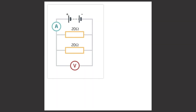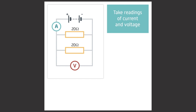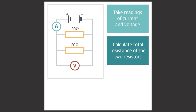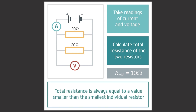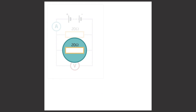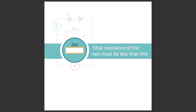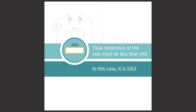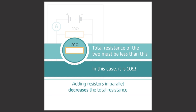Now we'll look at resistors in parallel. Make a circuit with two 20 ohm resistors in parallel with each other. The voltmeter is added in parallel and the ammeter is in series as usual. Take readings of current and voltage and calculate the total resistance of the two resistors. You should find that the total resistance is 10 ohms. The rule for resistors in parallel is that the total resistance is always equal to a value smaller than the smallest individual resistor. Here the smallest resistor in parallel is 20 ohms, so the total resistance of the two resistors must be less than this — in this case it is 10 ohms. We consequently find that adding resistors in parallel decreases the total resistance.